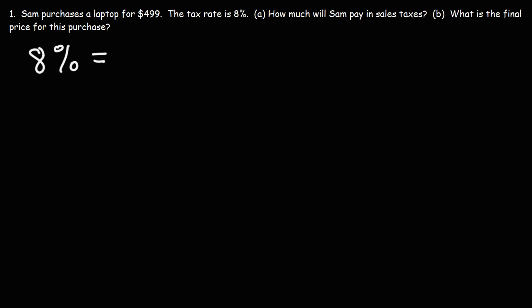The first thing we need to do is convert percentage into a decimal. So what is 8% as a decimal? All you got to do is take 8 and divide it by 100, or you can move the decimal point two units to the left. And this is 0.08. So that's 8% as a decimal.